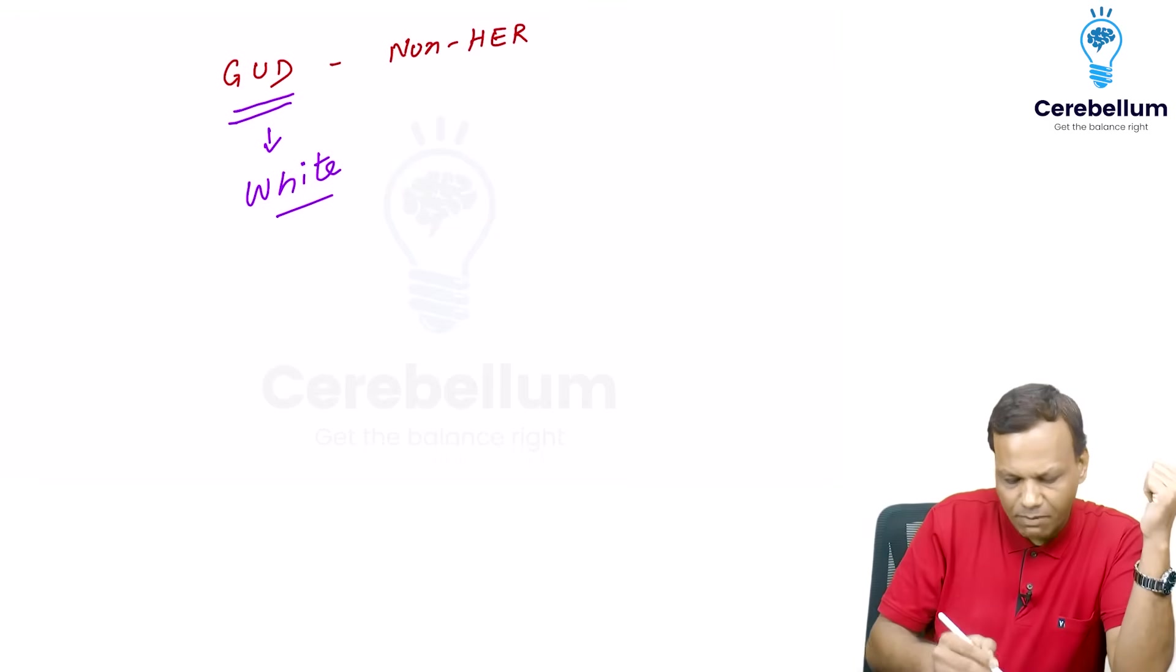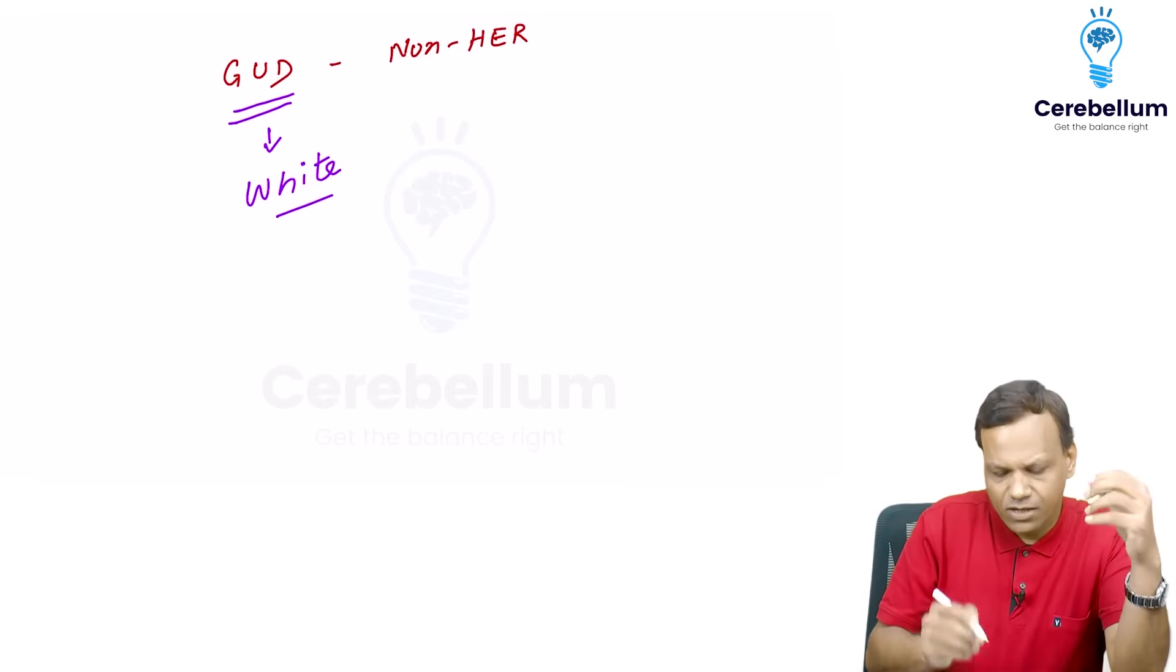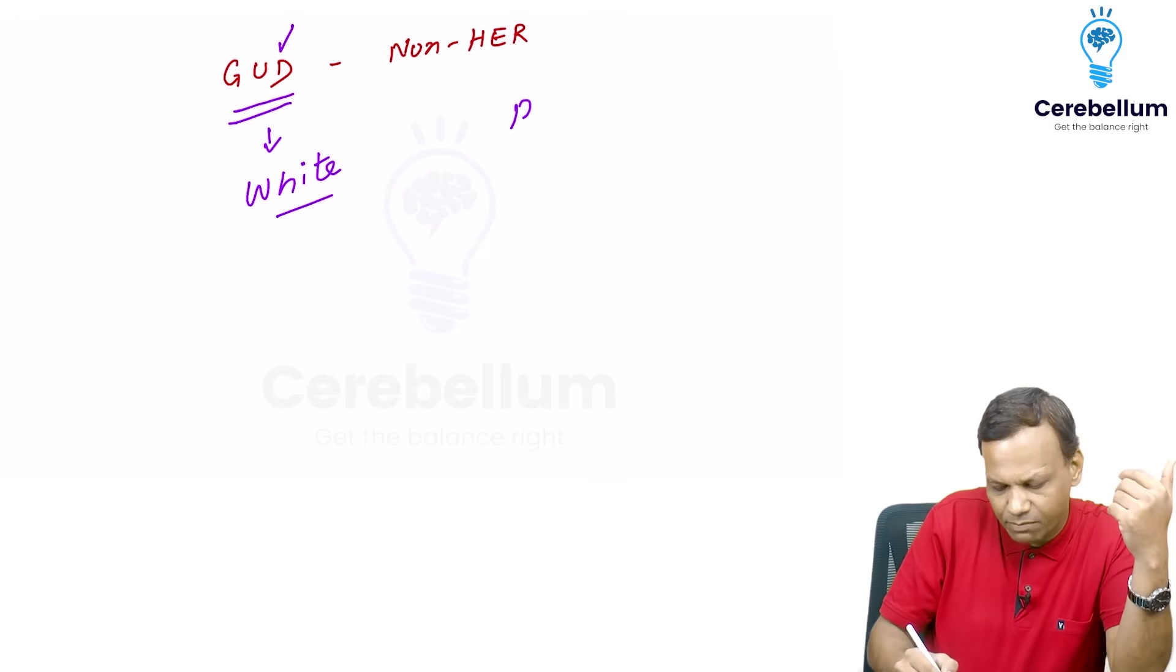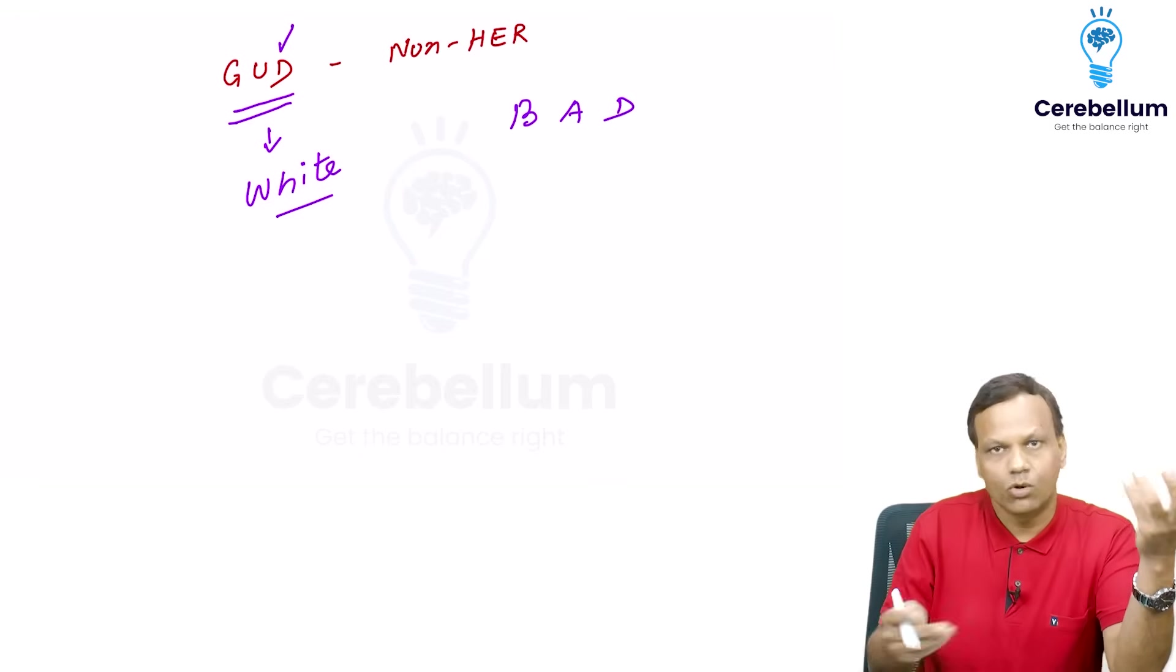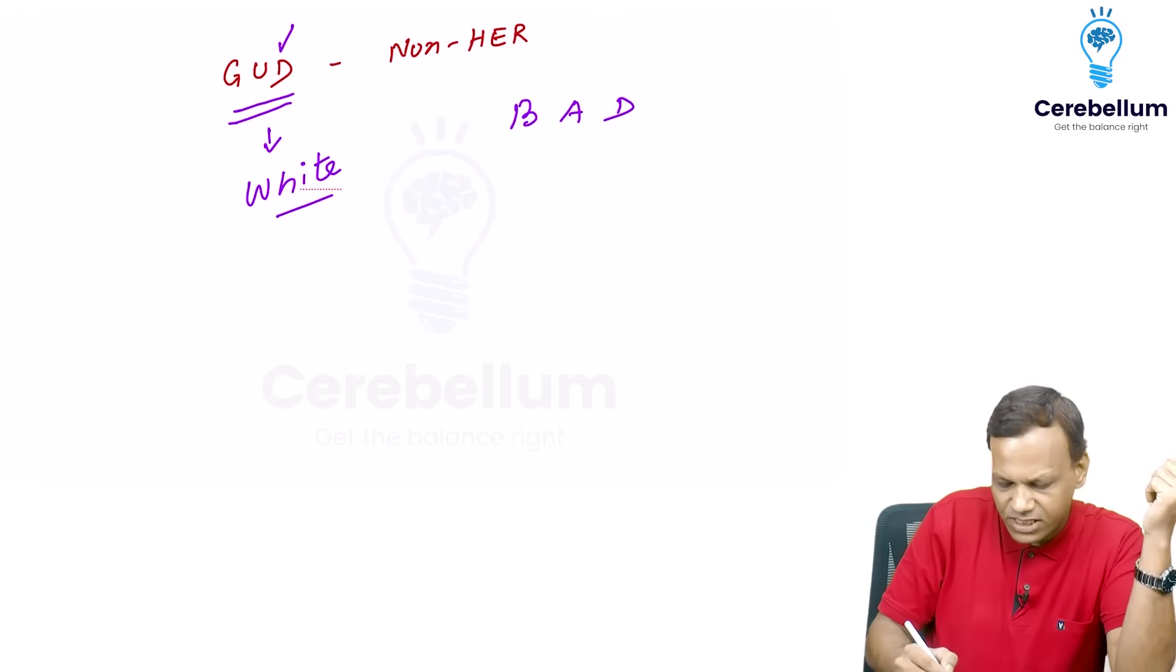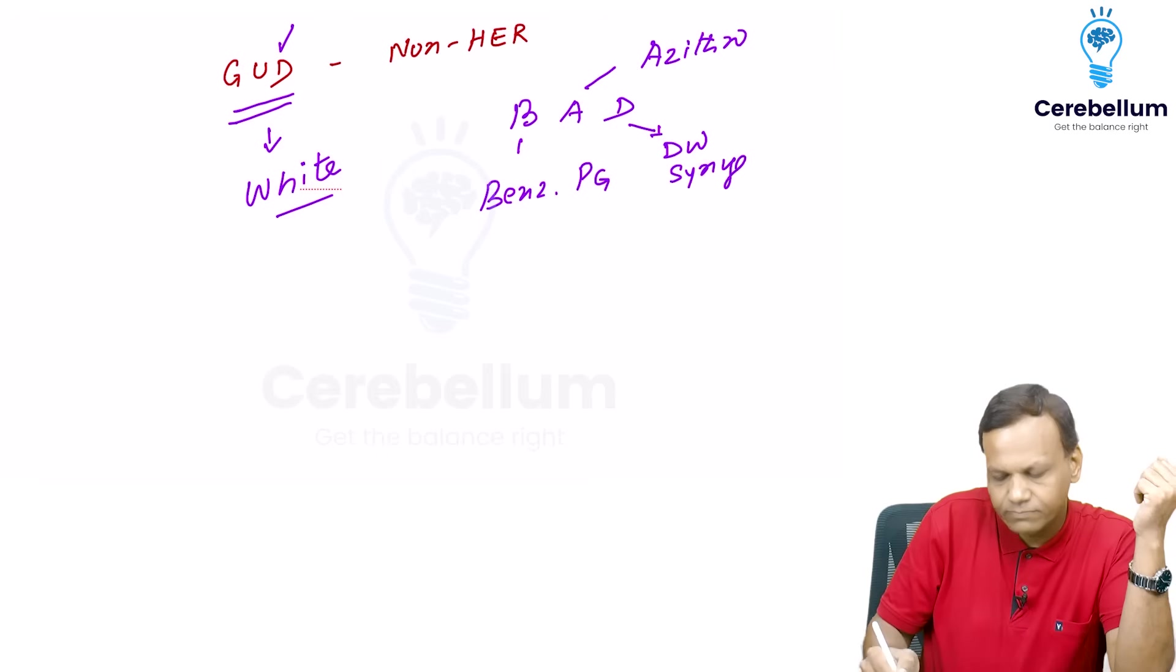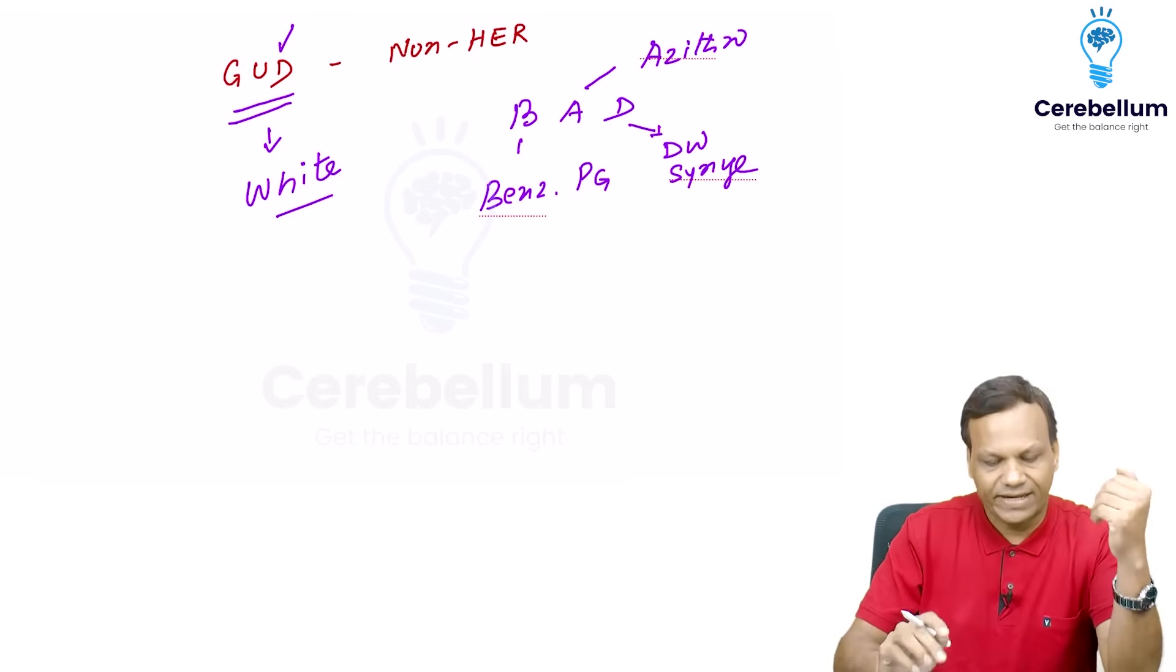Then second important thing to remember, what are the drugs in that? So it is white. It is good. So if it is good, there must be something bad. Good, opposite is bad. So what is bad? B for benzathine penicillin G, A for azithromycin and D for distilled water and disposable syringe.